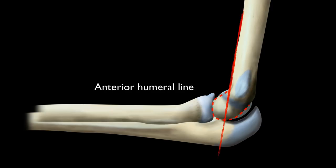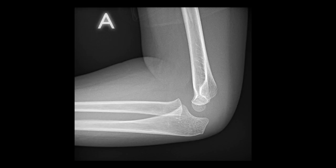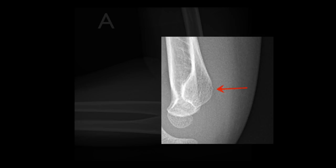Let's look back at our cases. In case A, if we draw a line down the anterior surface of the humerus and then draw in the expected location of the capitellum, we can see that a force applied down the radius has displaced the capitellum posteriorly. In addition there is an anterior fat pad indicative of an elbow effusion. There is also irregularity of the dorsal cortex that represents the fracture.